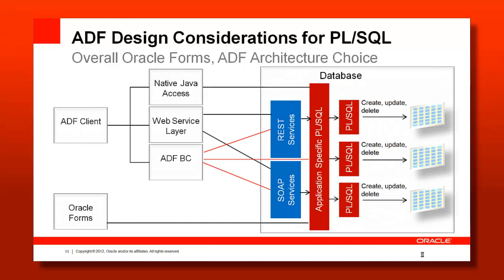In the ADF case, we would have an ADF Business Components model — which is what this training focuses on, what Oracle Fusion Apps uses, and what many customers use. ADF Business Components has three options to access legacy data exposed through stored procedures: going straight through a programmatic view object or entity object, calling from a managed bean through the binding layer, or hooking onto a RESTful or SOAP service. This forms the architecture within which you as a developer can decide what makes the most sense for your ADF application.